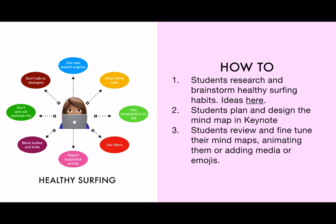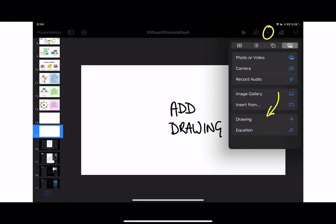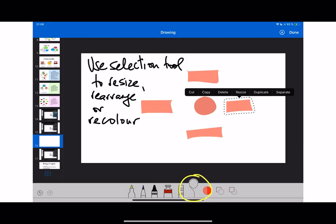So how do you actually do this on Keynote? Let me show you. So you tap on the plus button, you can add shapes, or add plus the button, and you can add the drawing. When you do drawings, you can use the selection tool to resize or rearrange or move things around. You can even change the color.